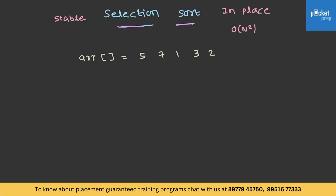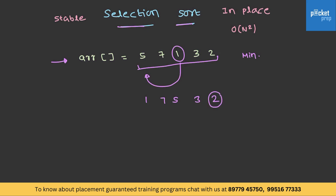Let's try to understand selection sort. Suppose we have this array. Selection sort looks for the minimum element among all existing elements. It finds the minimum element — here it is 1 — and 1 will be placed at the initial index by swapping both elements. Similarly, it repeats the process and searches for the next minimum element, which is 2, and 2 will be replaced at the first index. The process repeats until the entire array is sorted.